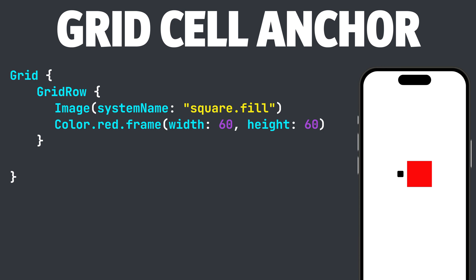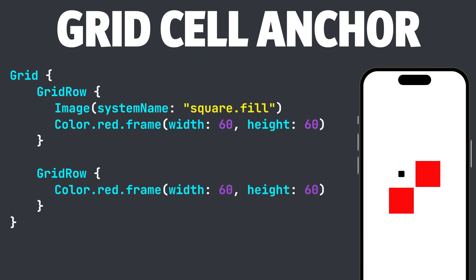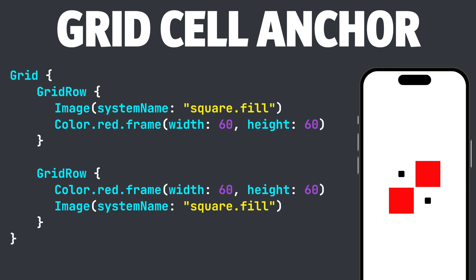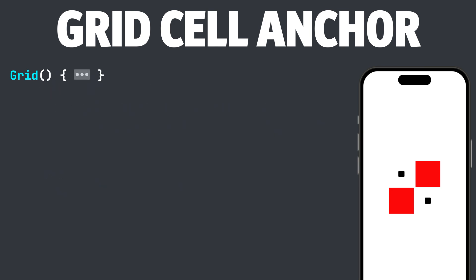Let's add another grid row and then add another Color.red with the same frame modifier — height of 60 and width of 60. Below our Color.red, let's add another system image containing square.fill. Now that our grid is set up, the grid has a few parameters we can set to adjust the entire grid. These parameters are alignment, horizontal spacing, and vertical spacing.